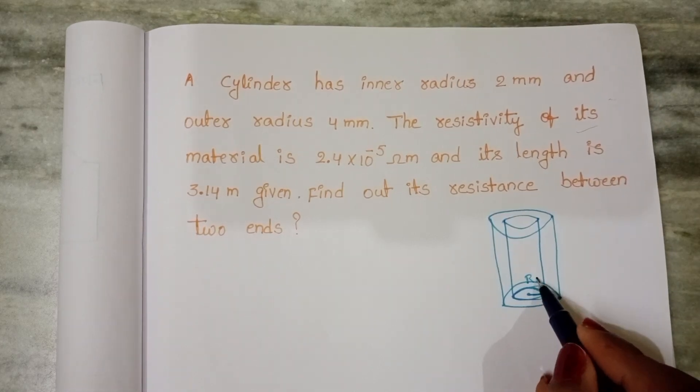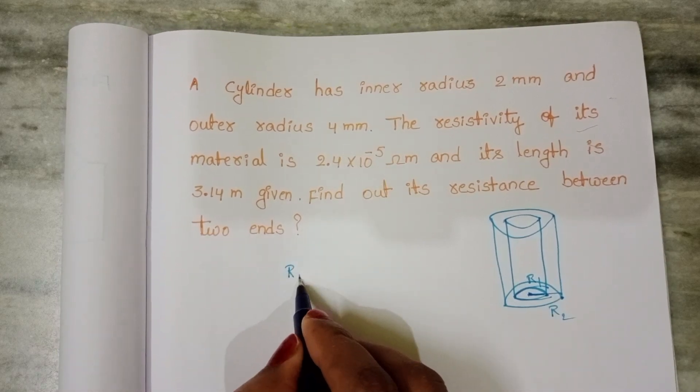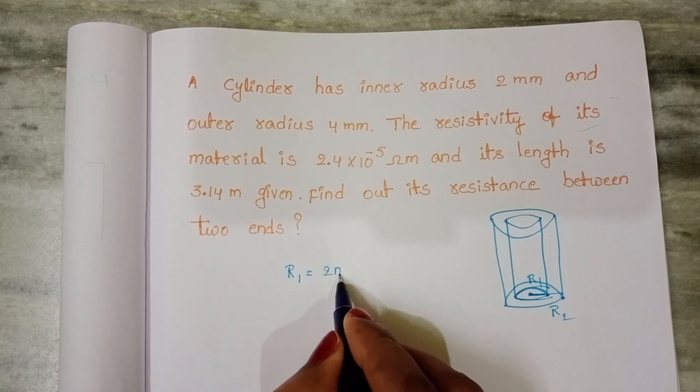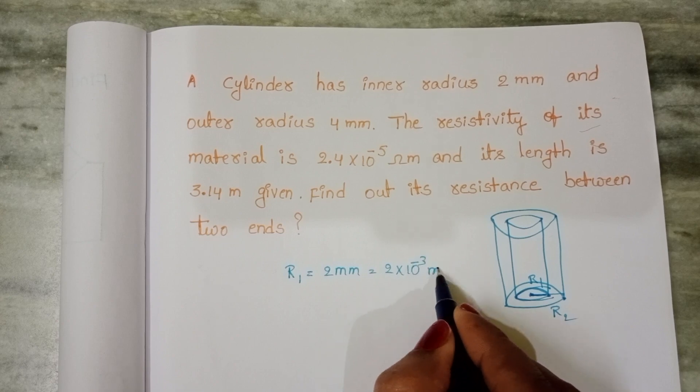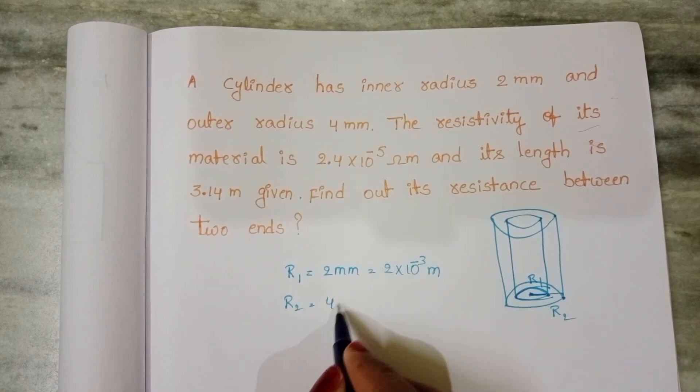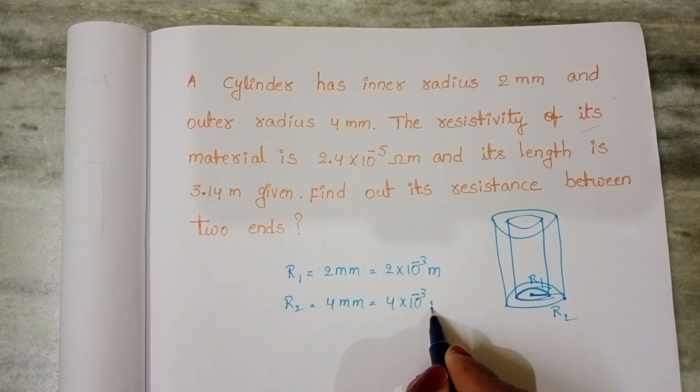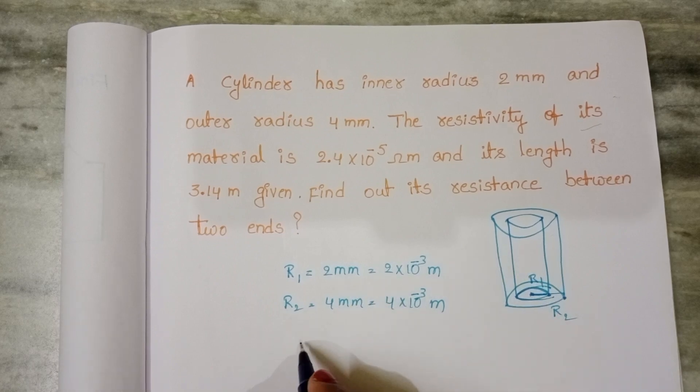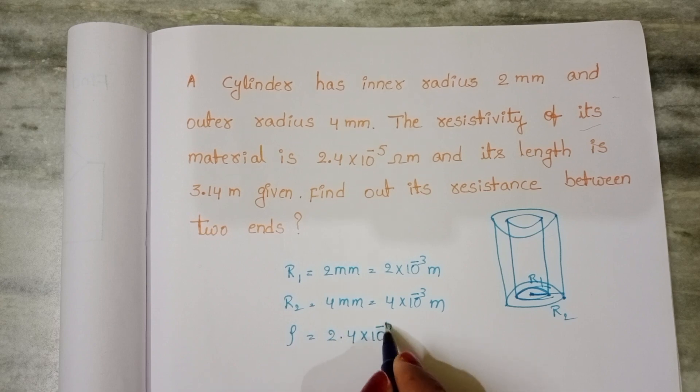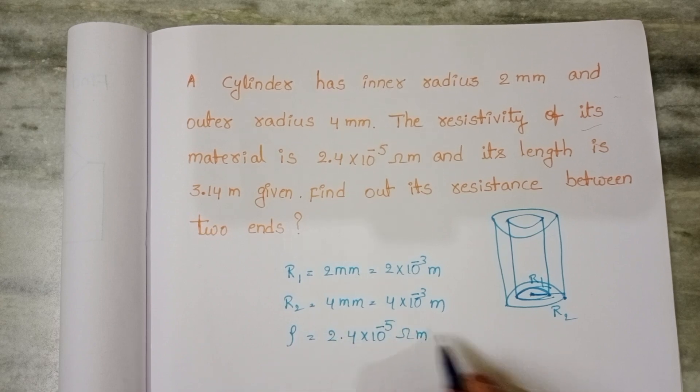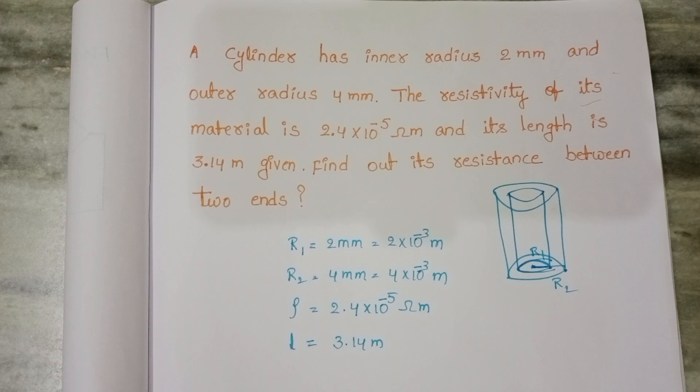Inner radius let it be R1 and outer radius R2. Given R1 equals 2 mm = 2 × 10⁻³ meters and outer radius is 4 mm = 4 × 10⁻³ meter. And also we know the resistivity of the material, ρ equals 2.4 × 10⁻⁵ ohm meter. Length of the cylinder equals 3.14 meter. We have to find out the resistance.